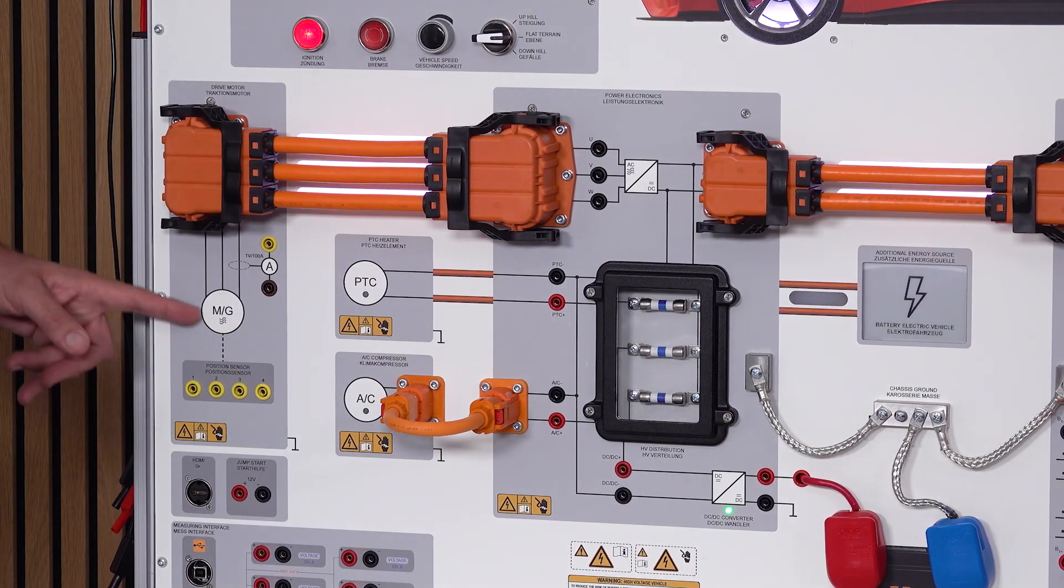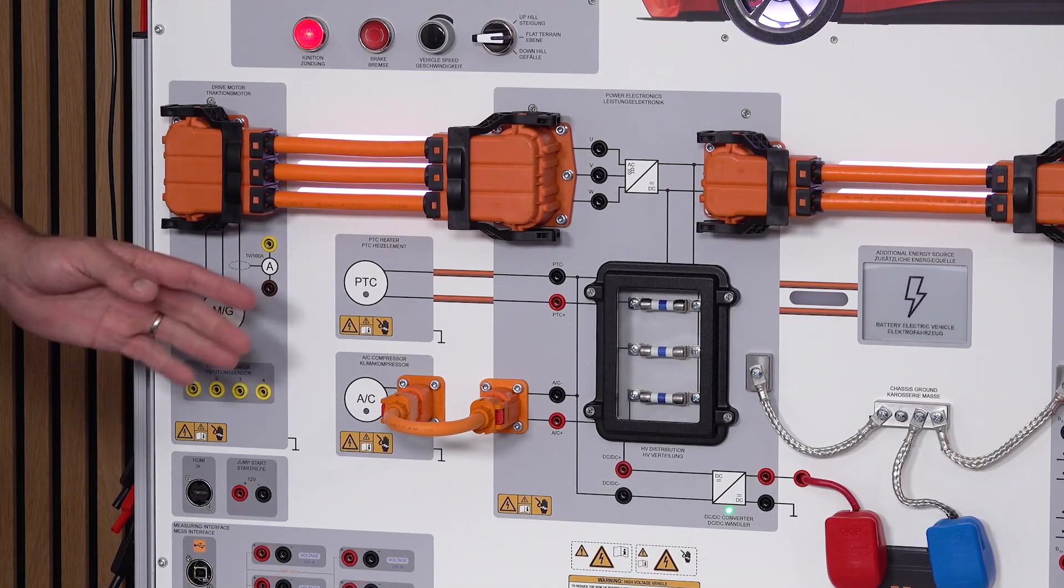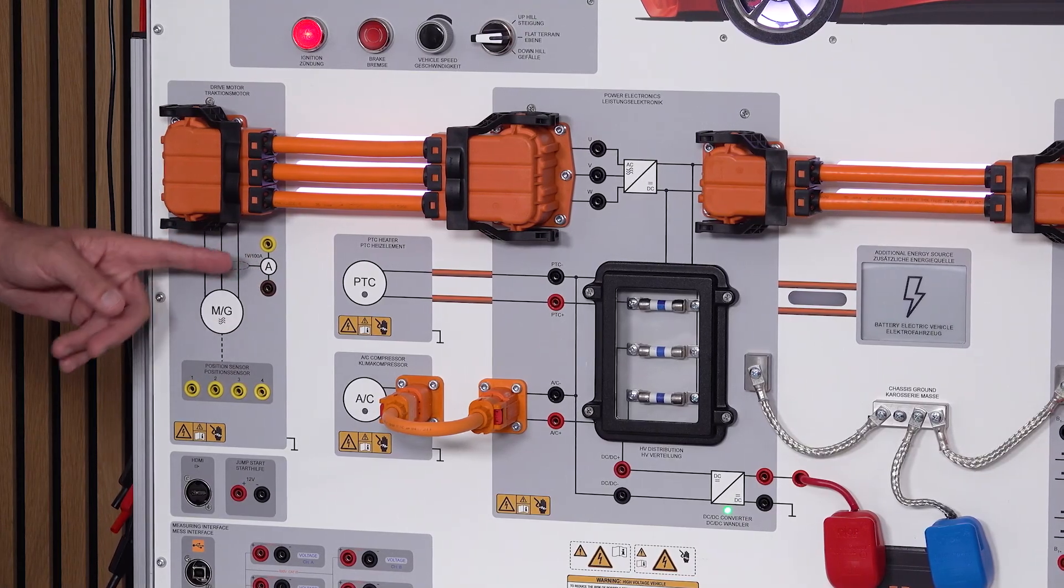But once the current runs through the windings of the motor, the current will be in AC. And that's what we can measure here with that ammeter.